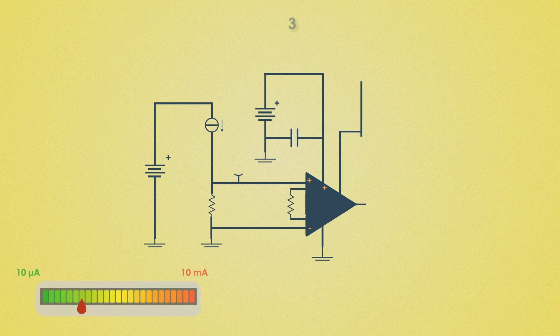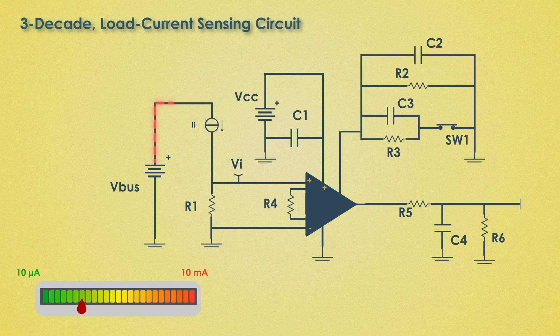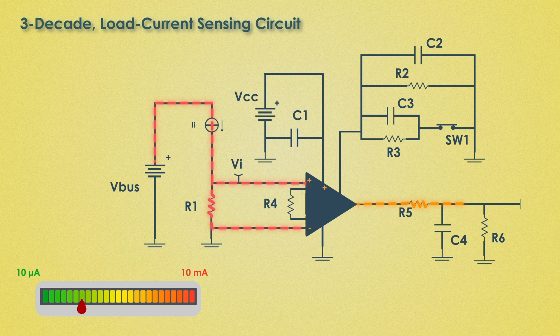Well, today we are going to explore the 3-Decade load current sensing circuit that spans an impressive range of 10µA to 10mA. Stick around because by end of this video, you will not only understand how it works but also understand why it's crucial for so many real life applications.